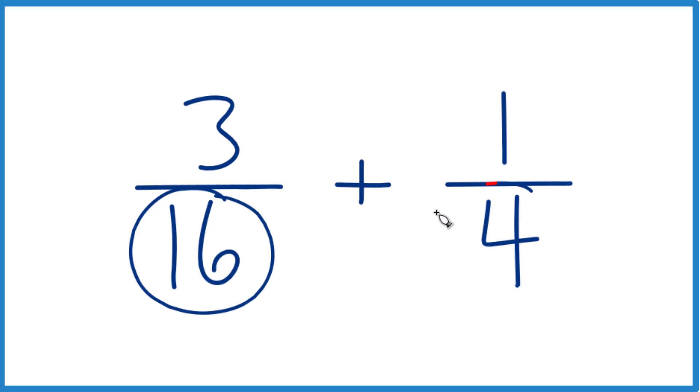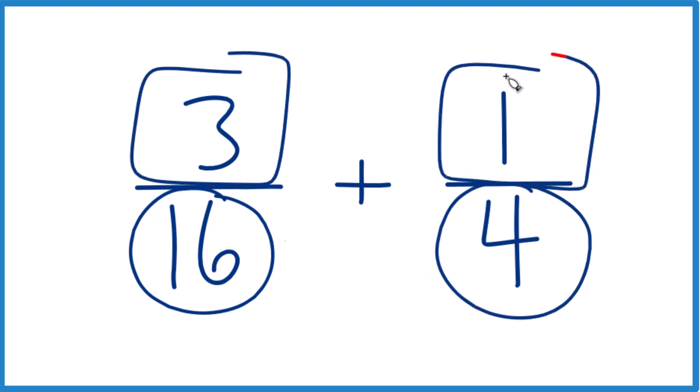Right now we have 16 and 4. But if these are the same, all we have to do is add the numerators together and we're good.